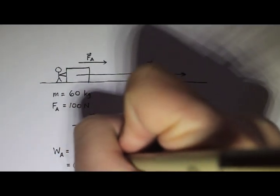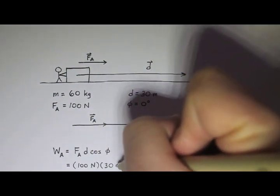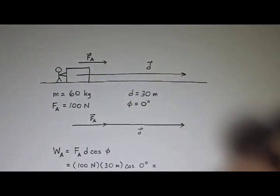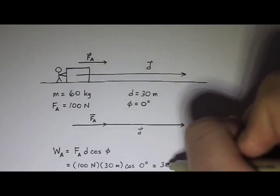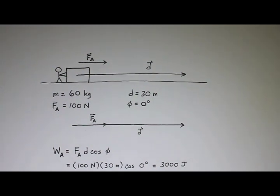Okay, so this would be 100 Newtons, and then D is 30 meters, and we said that the angle was zero degrees. And if you type all this into a calculator, you get something that's about 3,000 joules. Okay, that sounds good.